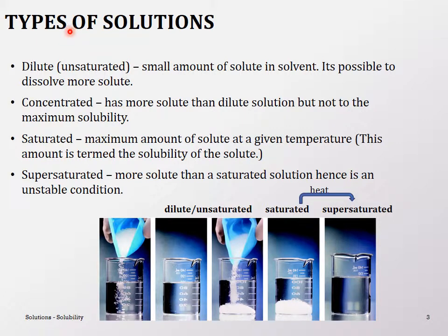There are different kinds of solutions: dilute, concentrated, saturated, and supersaturated. Concentrated solutions may not appear in all textbooks, but you'll see them in the lab. A dilute solution, also called an unsaturated solution, has a small amount of solute — you can still dissolve more. A concentrated solution has more solute than the dilute solution but not to maximum solubility, so you can still dissolve more. For example, a 1 molar solution versus a 6 molar solution of sodium chloride — the 6 molar is more concentrated but not necessarily saturated.